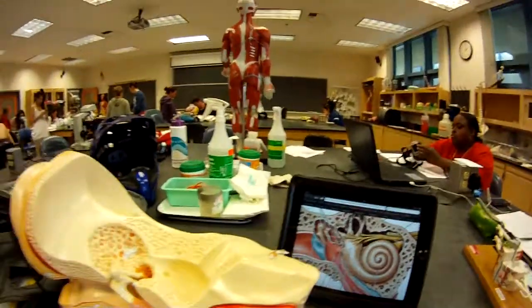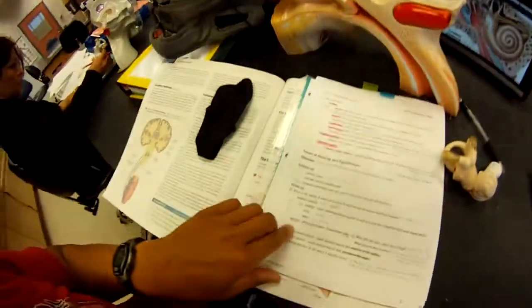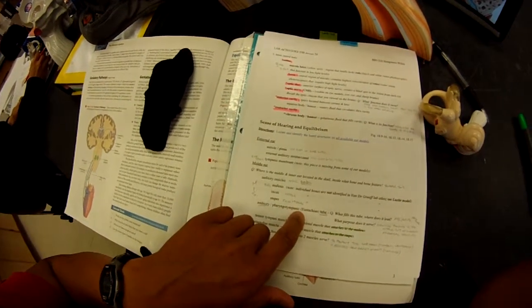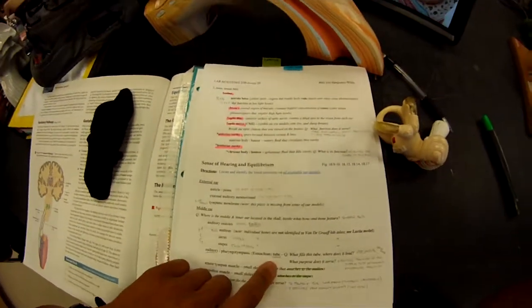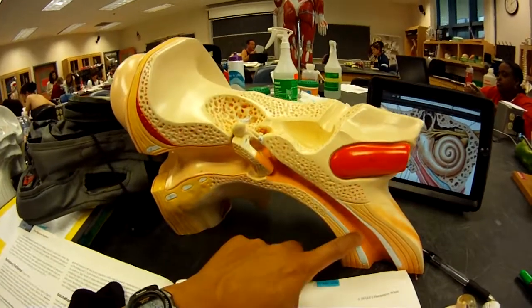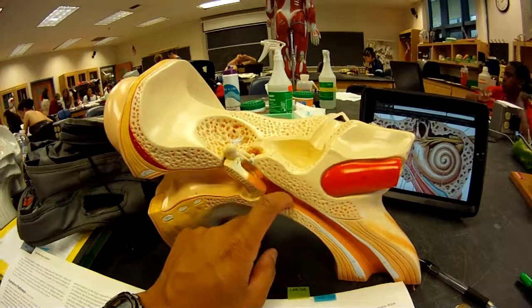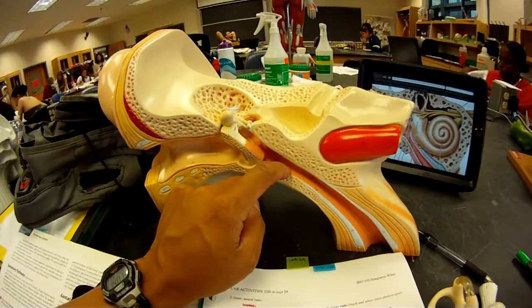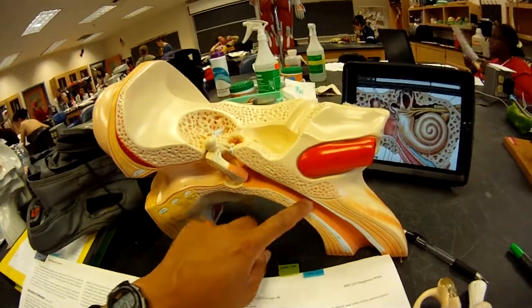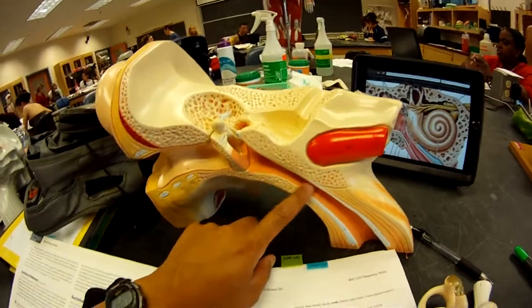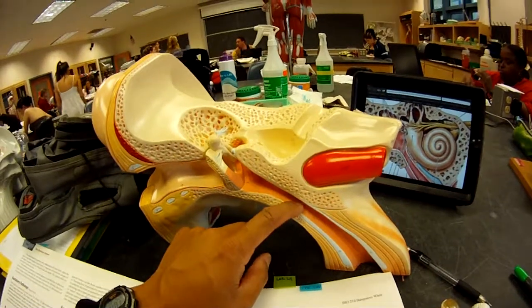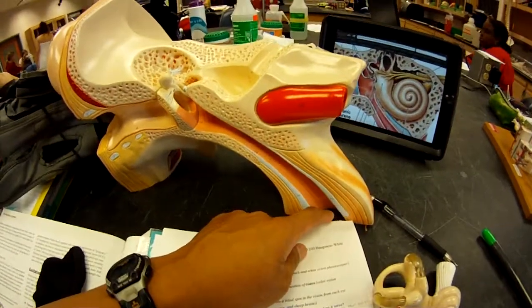The auditory slash pharyngotympanic tube is that word right there. This is the auditory tube, slash pharyngotympanic tube. What fills this is air and also mucus that leads out into the nasal pharyngeal.